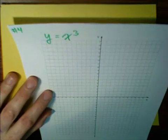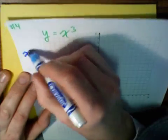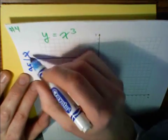Let's do y equals x cubed first. And like we've been doing, we're going to make a table of values. For every value of x, we're going to figure out the y.